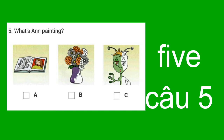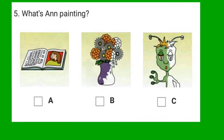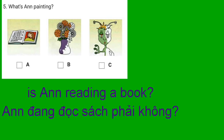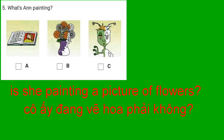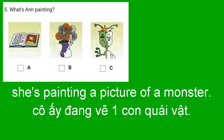5. What's Anne painting? Is Anne reading a book? No, she's painting. Is she painting a picture of flowers? No. Oh, no. She's painting a picture of a monster.